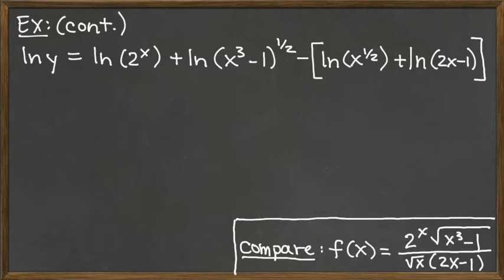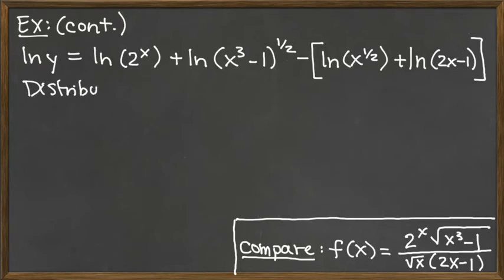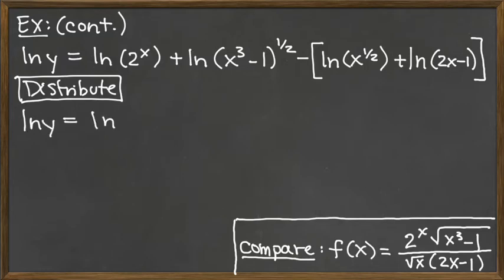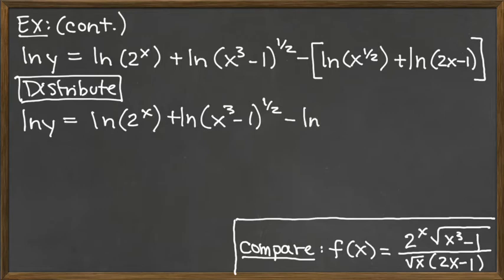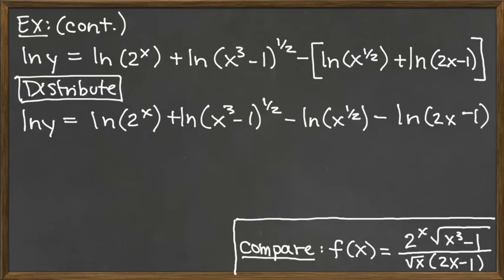The next thing we need to do is distribute the negative sign across the addition, which will eliminate the extra set of parentheses. So we have natural log of y equals natural log of 2 to the x, plus natural log of x cubed minus 1 to the one-half, minus natural log of x to the one-half, minus natural log of 2x minus 1. Now the right-hand side is just terms added and subtracted together — we've made progress.